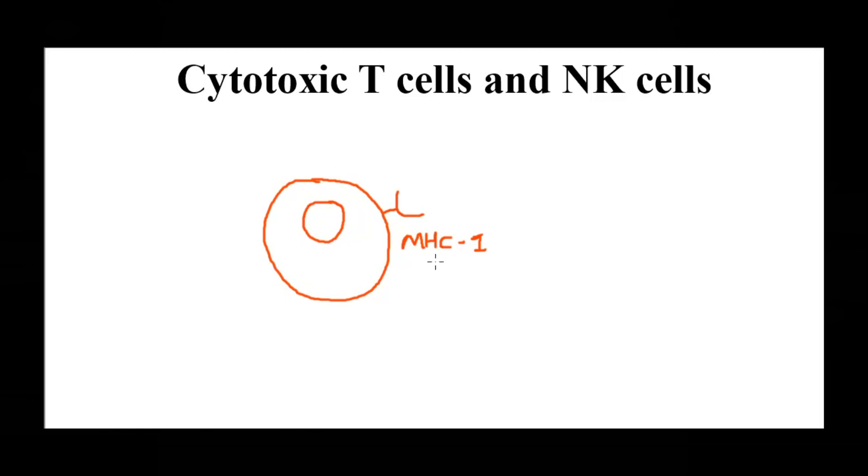In our body, all the nucleated cells have MHC class 1. When a cell has turned into a cancerous cell, the MHC class 1 expression on the surface either gets reduced or other surface proteins on the membrane have their profile changed. There will be a difference in the expressed proteins on the membrane surface of the cell compared to that of a normal cell.